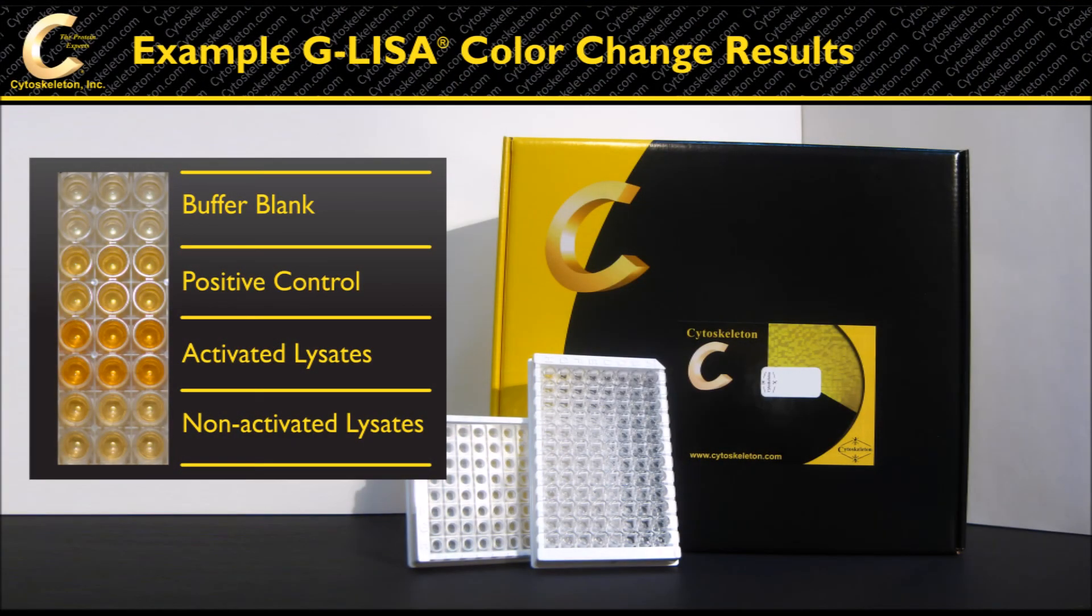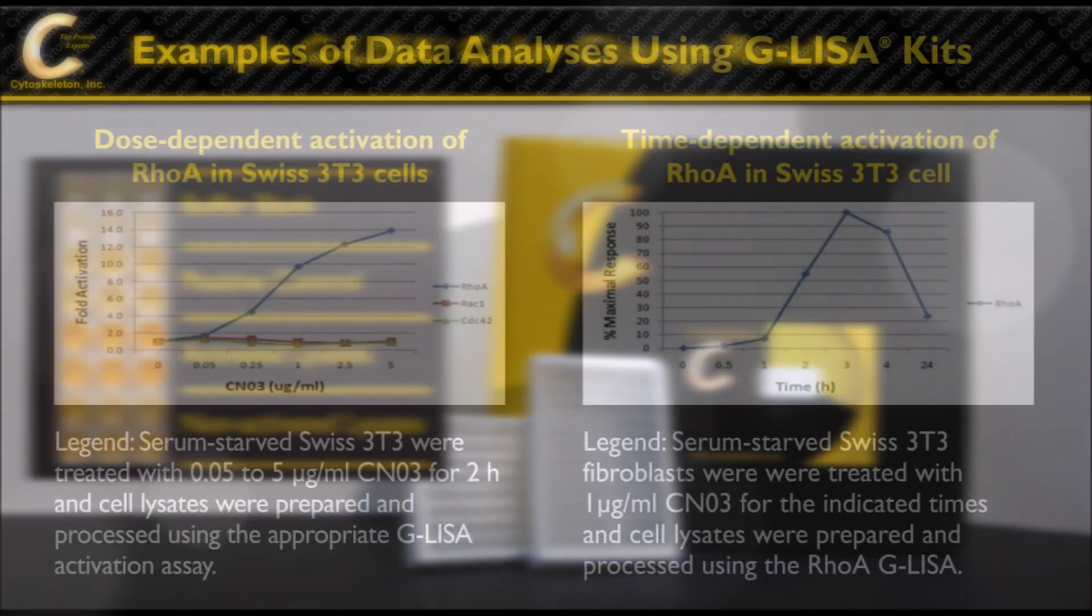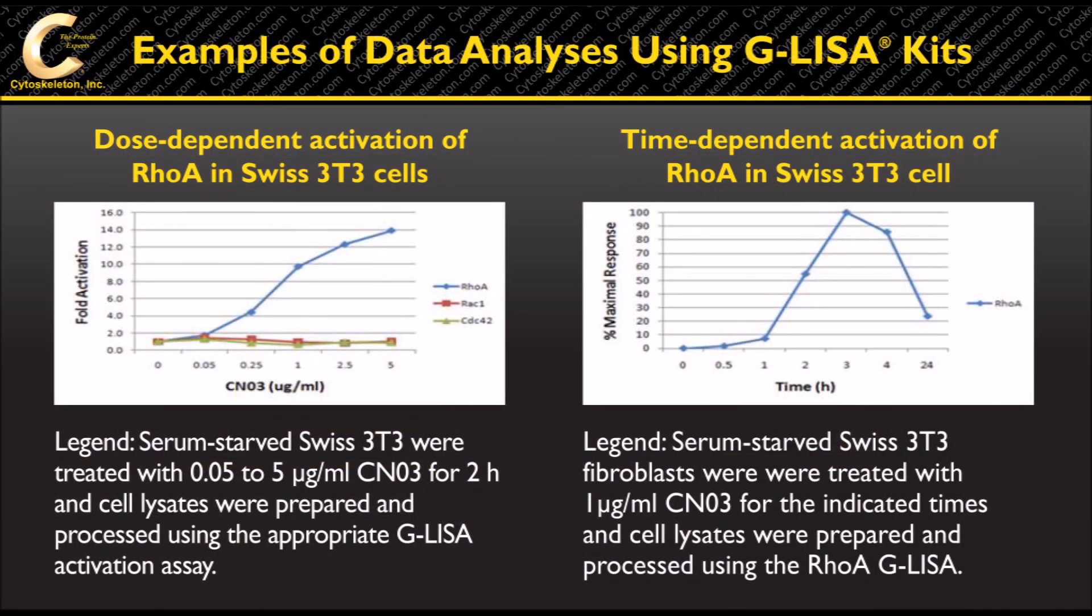For the best linear range of detection, the positive control reading should be approximately three times buffer blank value. It should be noted that luminescence readings can vary widely depending on the machine type used. With the OD or luminescence data, graphs can be made in Excel to depict the effects of treatments, concentration responses, or time courses. If you need a plotting template file, please contact technical support at t-service at cytoskeleton.com.